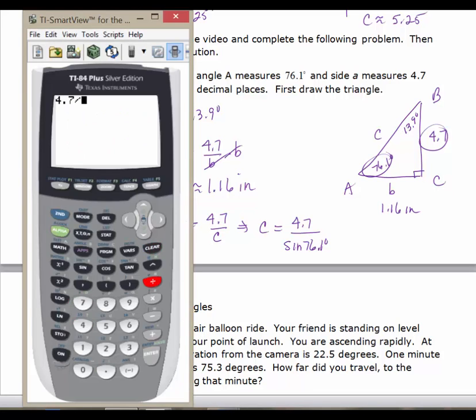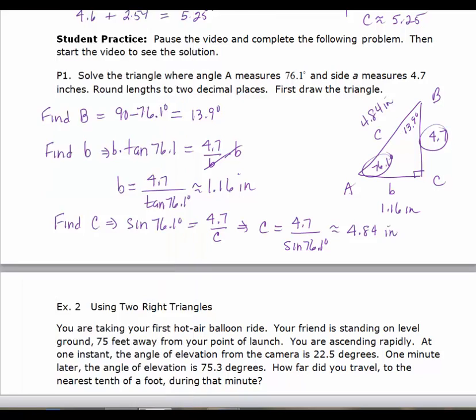4.7 divided by the sine of 76.1 is approximately equal to 4.84 inches. So we were given the 76.1, the 4.7, and the 90 degree angle. Then we found the 4.84, we found the 13.9, and the 1.16. You're always going to be given three pieces of the triangle in order to find the other three.